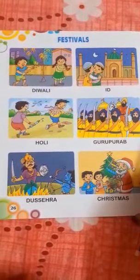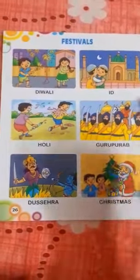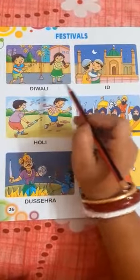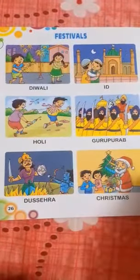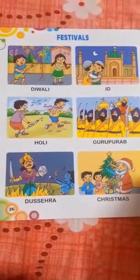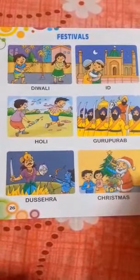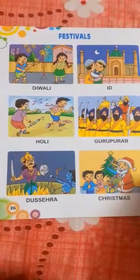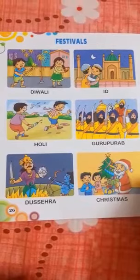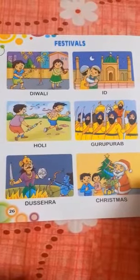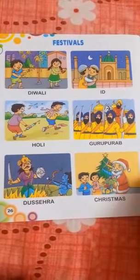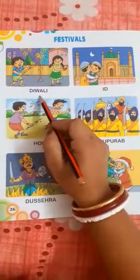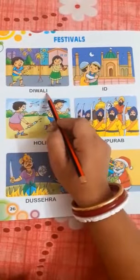First, we are going to talk about Diwali. Children, Diwali is the festival of light. People decorate their house with lights and candles. We enjoy Diwali festival. Now, what is the spelling of Diwali? D-I-W-A-L-I, Diwali.